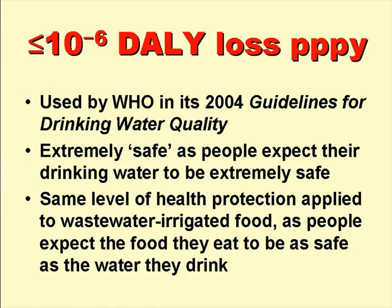This tolerable additional disease burden of no more than 10 to the minus 6 DALY loss per person per year was used by WHO in the 2004 edition of its guidelines for drinking water quality, and it's extremely safe, as people expect their drinking water to be extremely safe. This same level of health protection is applied to wastewater irrigated foods, as people expect the food they eat to be as safe as the water they drink.